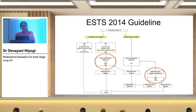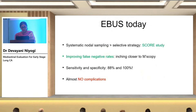Even in 2022 we follow the 2014 guideline: if your PET scan shows no mediastinal nodes, either EBUS or mediastinoscopy alone is sufficient for invasive mediastinal staging. But if the PET scan shows suspicious-looking nodes, you start with EBUS. If EBUS comes negative, it is mandatory to confirm with a mediastinoscopy.